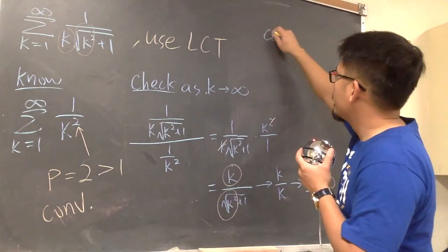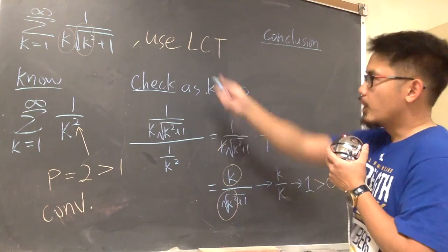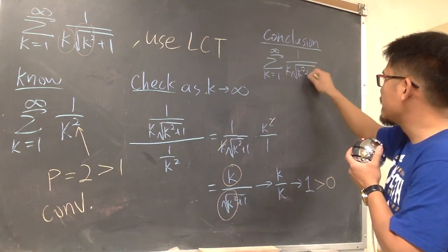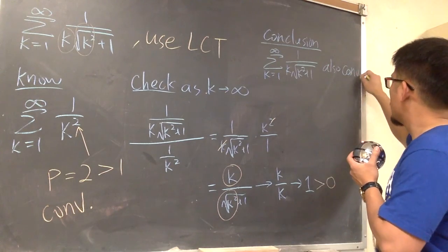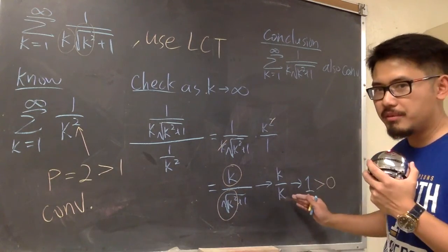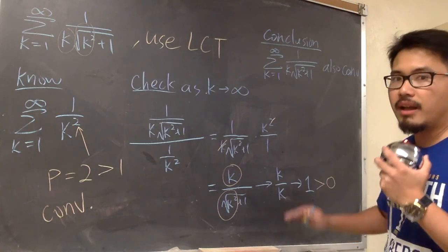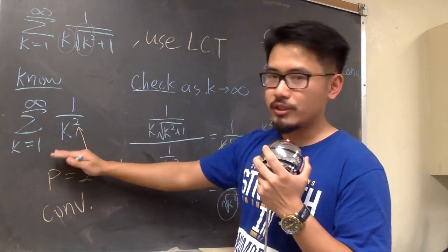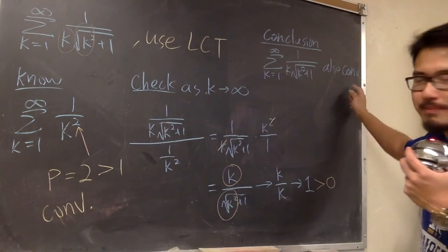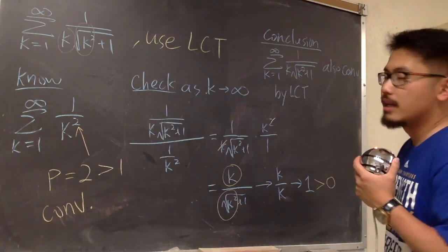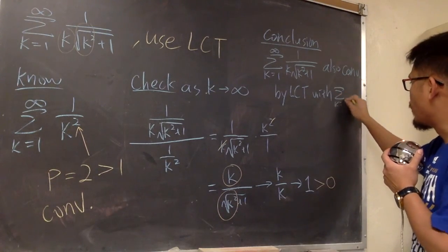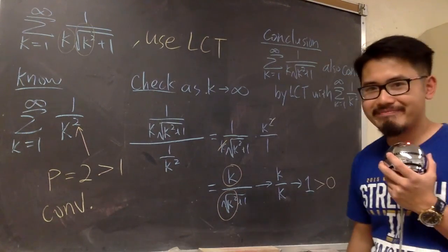We conclude that the original series, sigma when k goes from 1 to infinity of 1 over k times square root of k squared plus 1, also converges. Remember, for the limit comparison test to apply, the limit must be bigger than 0 and finite — it cannot be 0 and cannot be infinity. When those conditions hold, the original series shares the same convergence behavior as the comparison series, which is sigma 1 over k squared.